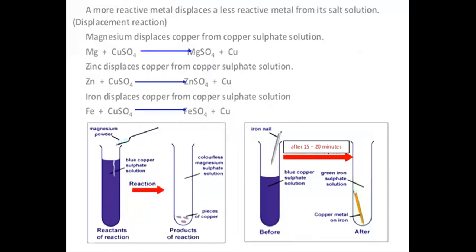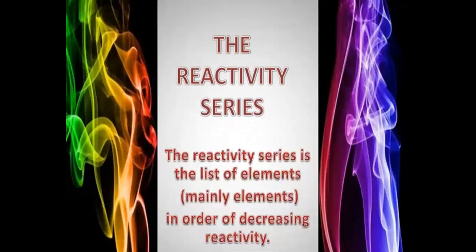Magnesium displaces copper from copper sulfate solution in a chemical change. These metals being displaced by highly reactive metals are arranged in the form of a reactivity series. The reactivity series is the list of elements, particularly metals, in order of decreasing reactivity.